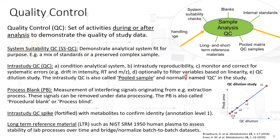We can also filter the variables — all the metabolites and intensities — according to the QC pool. We can also use it in a dilution study, where if we want to compare sample groups, it's a good idea to demonstrate that a metabolite that is half in intensity should also be half in concentration. We typically take the full sample and dilute by a factor of two, a factor of four, and so on. We then expect to see a linear relationship in the signal.